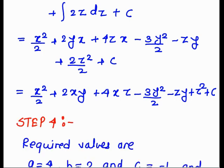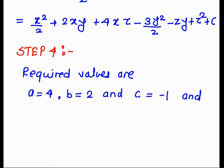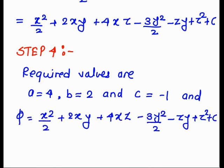Step 4 — Conclusion: The required values are a = 4, b = 2, and c = −1. The required scalar potential is phi = x²/2 + 2xy + 4zx − 3y²/2 − zy + z² + c.